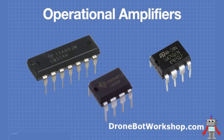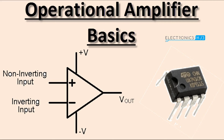Operation: NMOS (N-channel) — when a positive voltage is applied to the gate with respect to the source, an electric field is created, attracting electrons from the source to form a conductive channel between the source and drain, and current flows from the source to the drain. PMOS (P-channel) — when a negative voltage is applied to the gate with respect to the source, a conductive channel is formed for holes to flow from the source to the drain. Modes of operation: Cut-off — no current flows between the source and drain. Saturation — maximum current flows. Triode/Linear — intermediate current flow between cut-off and saturation.